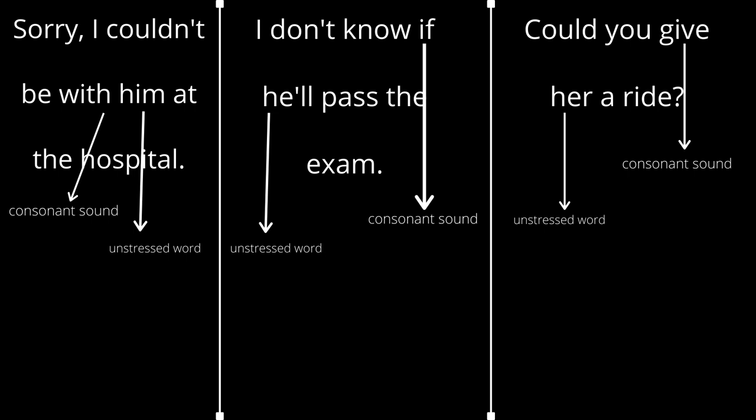Next sentence: 'I don't know if he'll pass the exam.' The elided H occurs with the word 'he'll,' because 'he'll' is unstressed and the word before it, 'if,' ends in a consonant sound — F. So we do not say 'he'll,' we just say 'eel.' 'I don't know if he'll pass the exam.' And 'he,' as I mentioned, is one of those words susceptible to H-elision.